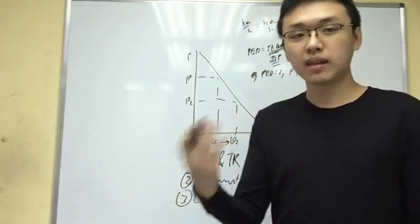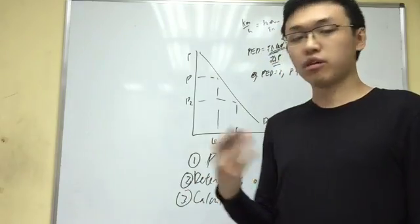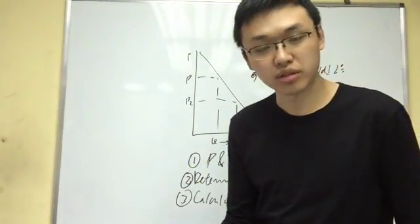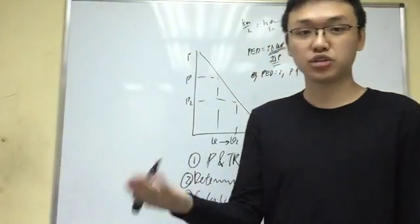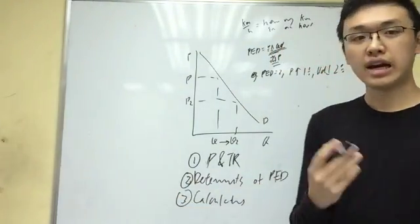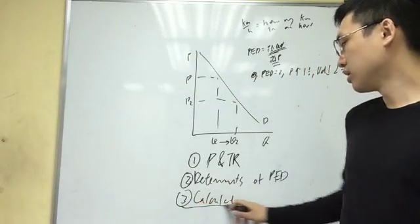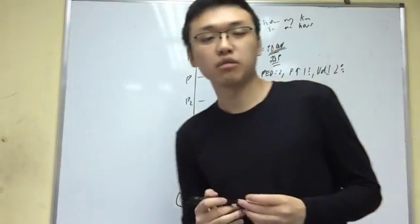One common exam question is, explain how firms can use PED to maximize total revenue. Another exam question possibly is, explain why manufactured goods have a higher PED than agricultural goods. And then calculation, there are a range of things that can ask you to calculate. Well, this is it for today.